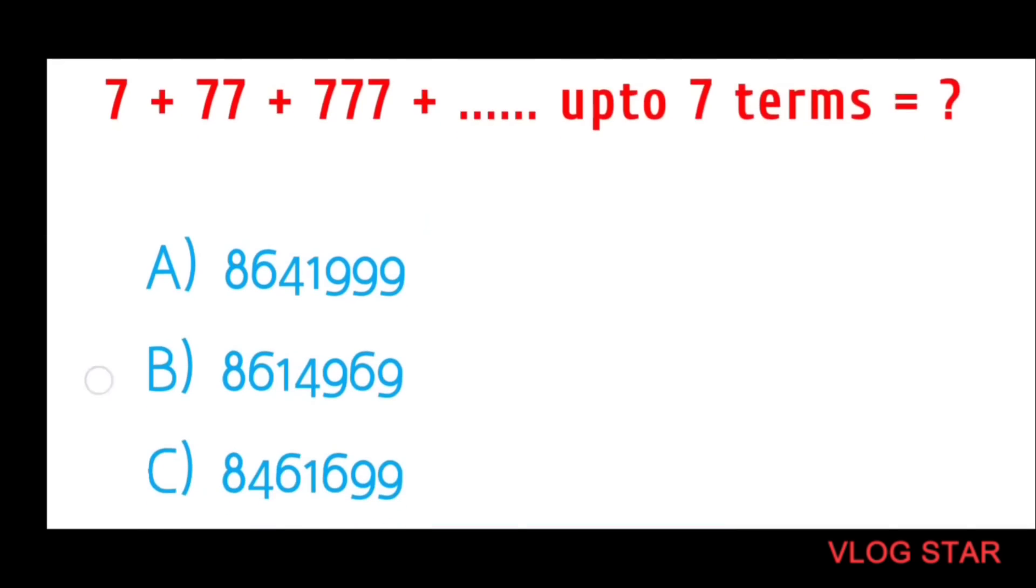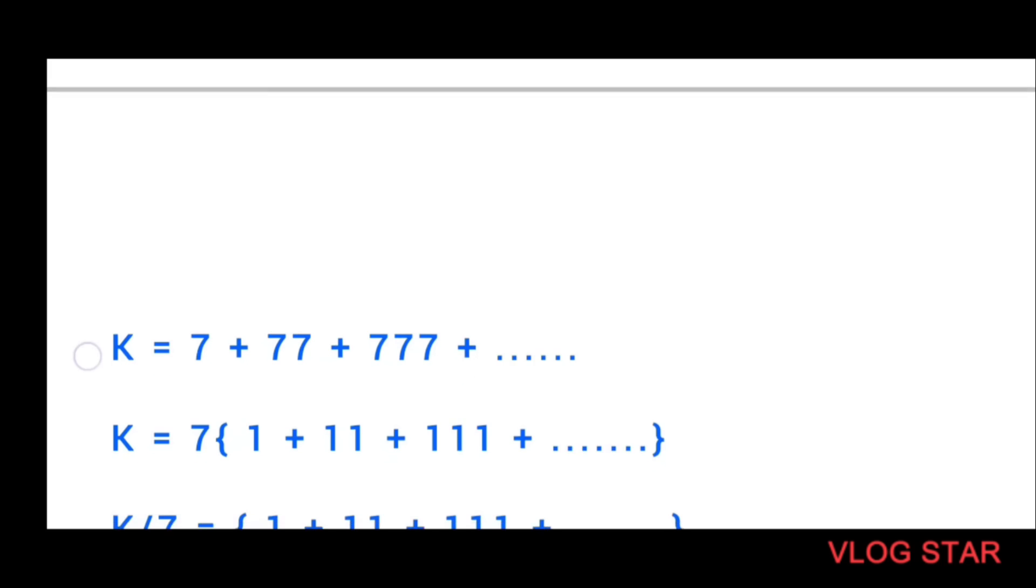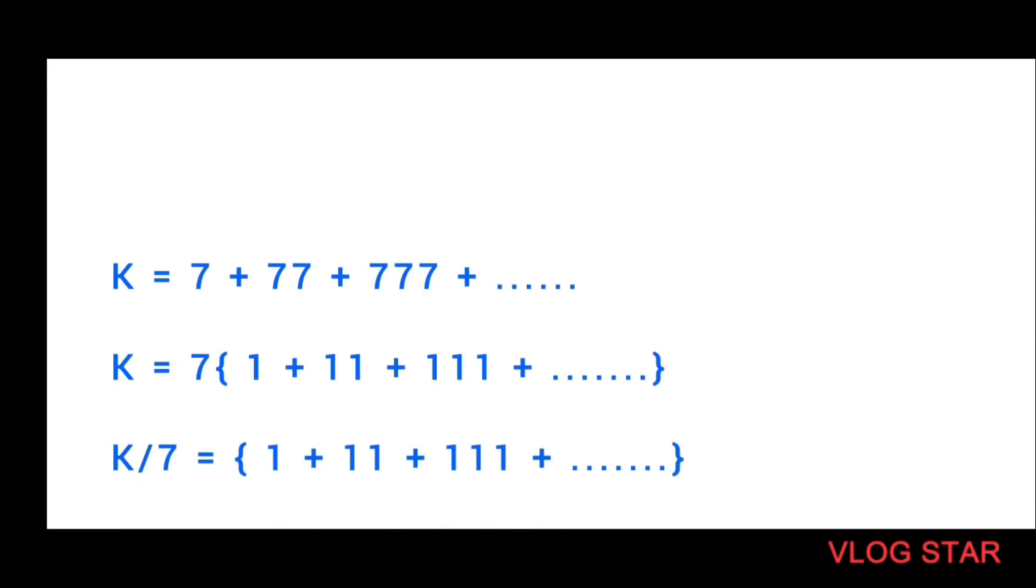Now the trick that I used here is firstly I took seven common, and if I do that I will have 1 plus 11 plus 111 and so on for seven terms. I took 7 on the left-hand side, so it became K by 7 as you can see.